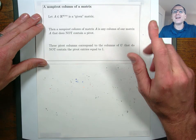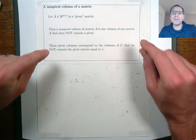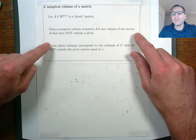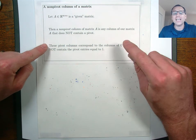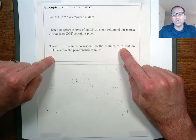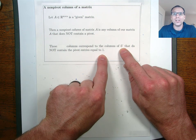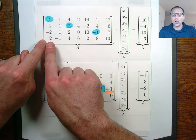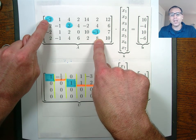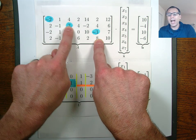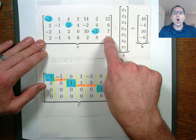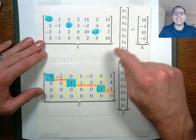With the definition of pivot column in hand, let's define the opposite idea. A non-pivot column of a matrix is any column in that matrix that does not contain a pivot element. Another way to say this is that non-pivot columns correspond to the columns of U that do not contain the single non-zero entry. Looking back at our second toy example, columns 1, 3, and 6 were pivot columns because they contained pivot elements in entries 1,1; 2,3; and 3,6. That immediately implies that columns 2, 4, 5, and 7 are non-pivot columns — there are no pivot entries in those columns.